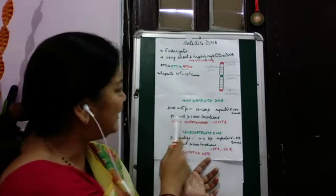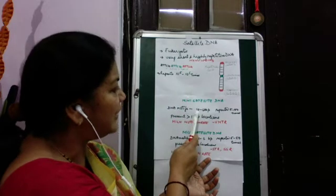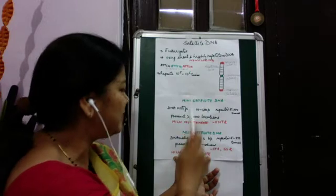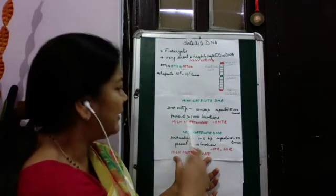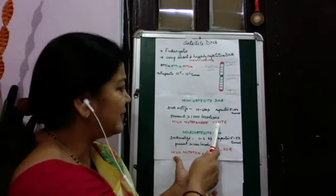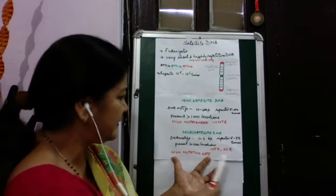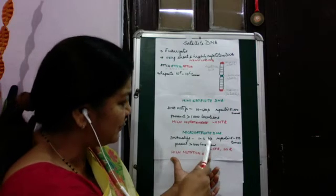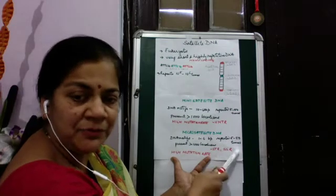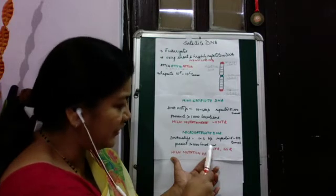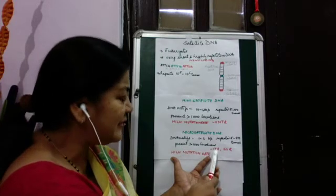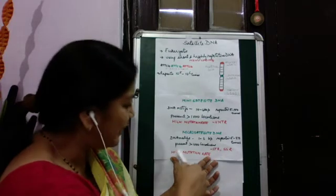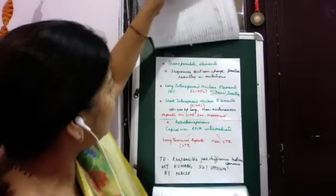Minisatellite DNA has motifs of 10 to 60 base pairs, repeated 5 to 50 times, present in more than 1,000 locations, and has high mutation rates — these are VNTRs. Microsatellite DNA has motif sizes of 1 to 6 base pairs, repeated 5 to 50 times, present in more than 1,000 locations, and is also called STR — short tandem repeats — or SSR — simple sequence repeats. They also have a high rate of mutation.